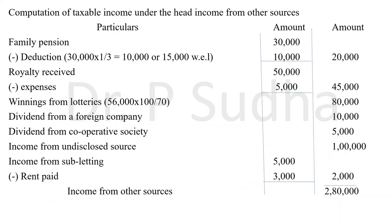This is how your answer will look. Whenever you are working out a problem under income tax, you have to give a title: 'Computation of taxable income under the head income from other sources.' Use a particulars column and two amount columns. Work out all calculations in the inner column and bring the final answer to the outer column. The total income from other sources is 2,80,000 rupees.